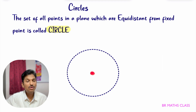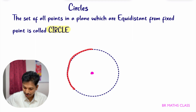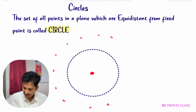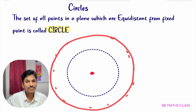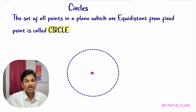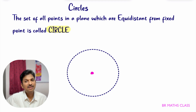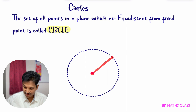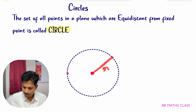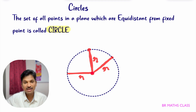You take one fixed point, then take all points equidistant from it and join them. If this is the fixed point, you take equidistant points all around — joining all these points gives you a circle. Now, two things to know: this fixed point is called the center of the circle, denoted C. The distance from the center to any point on the circle is called the radius, generally denoted by r. This length and this length are both radius — same distance.